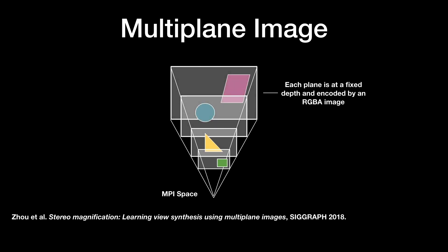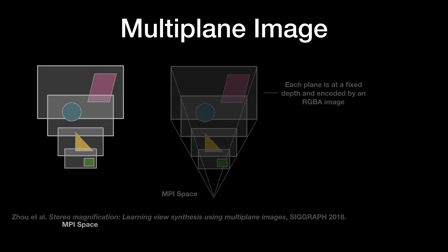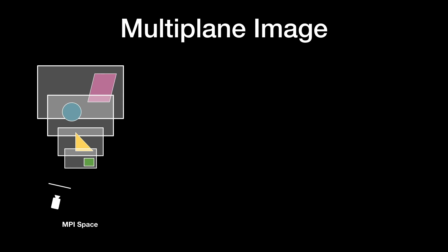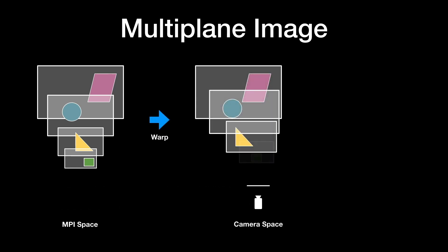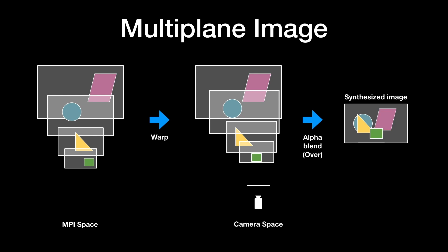The planes are positioned at equally spaced inverse depths with respect to a virtual reference camera. To render an MPI to an image at a new viewpoint, we first warp the MPI images and then composite them using standard alpha blending. But how do we create an MPI from a set of input images?